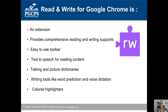What is Read&Write? Read&Write for Google Chrome is an extension, which means it must be added to the Chrome browser on a Chromebook, laptop, or Macintosh. An extension allows the application to do more than ordinarily. It provides comprehensive reading and writing support in an easy-to-use toolbar format, including text-to-speech options, a talking and picture dictionary, writing tools like word prediction and voice dictation, and colored highlighters for organization.